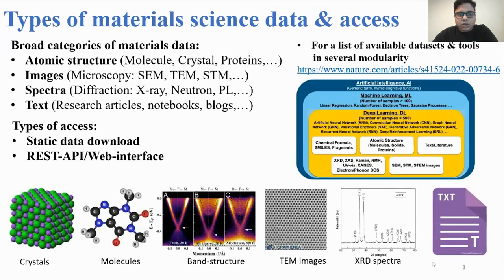When I talk about data in material science, there can be different types. There can be microstructure, atomic structure, so the molecule structure, protein structure. It can be images from microscopy — TEM, STM. It can be spectra, X-ray diffraction, neutron, photoluminescence. It can be text. So different modalities of the data.